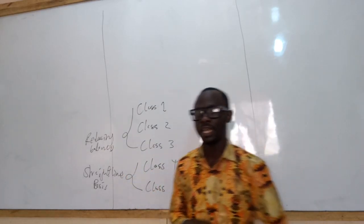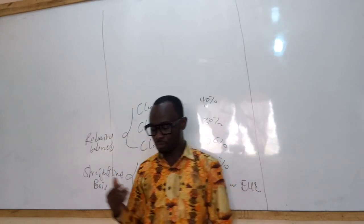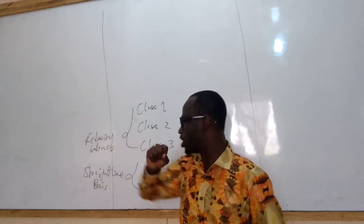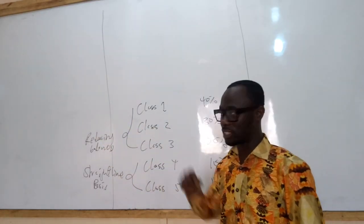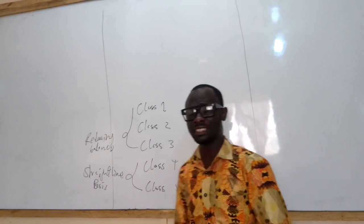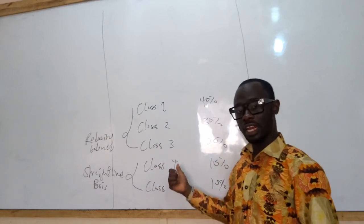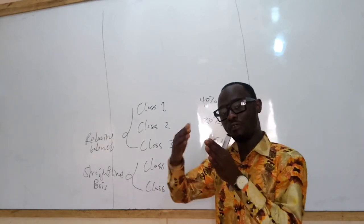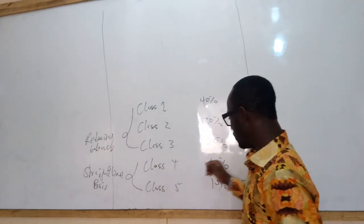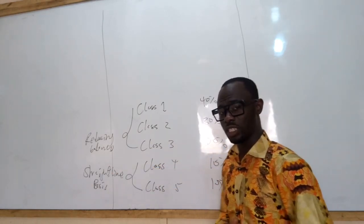Class 4 assets are buildings, structures, and similar works of a permanent nature. When we build a factory or an office facility, it is a Class 4 asset. Capital allowance on Class 4 is 10%, always calculated on the cost — which is the straight line method.